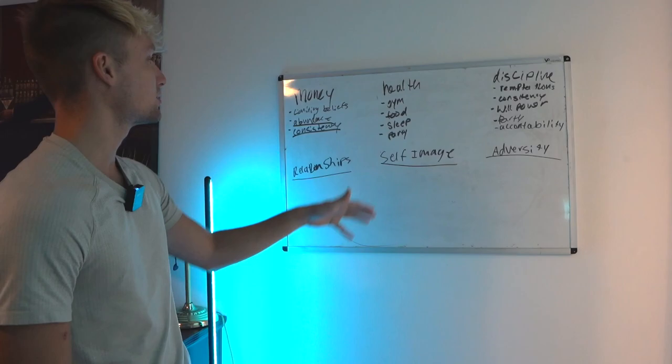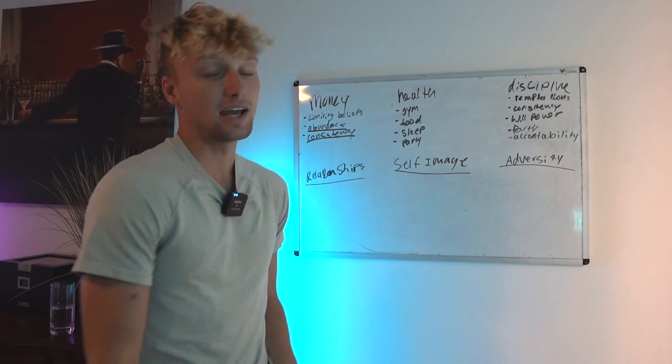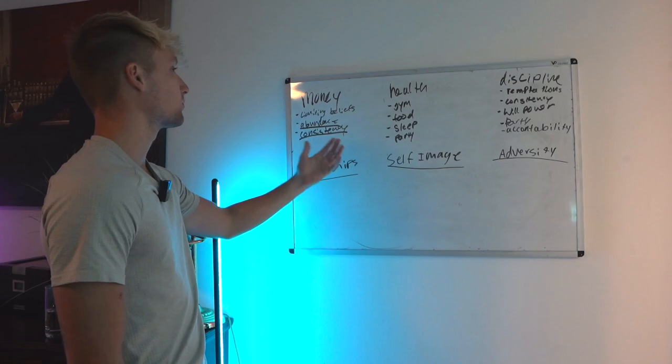So we have money, health, discipline, relationships, self-image, and adversity. We're going to be covering them one by one and at the end you'll see how they all kind of interconnect together.